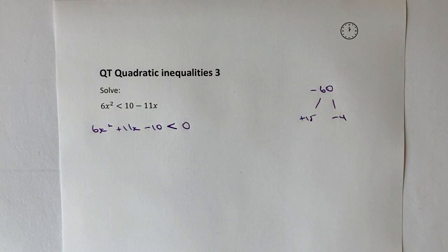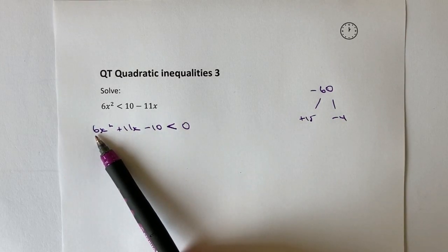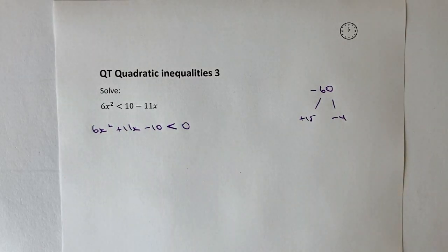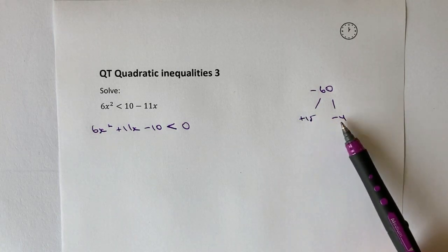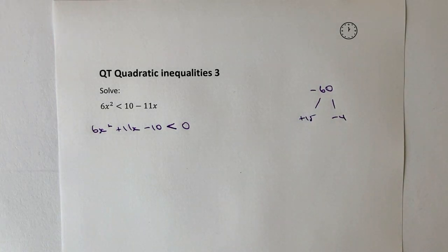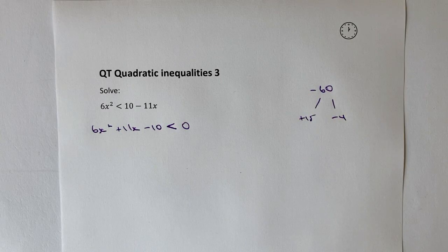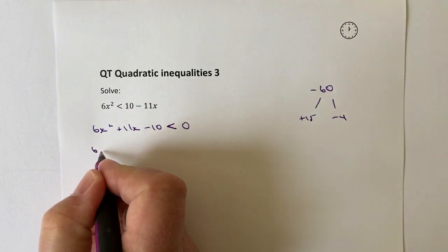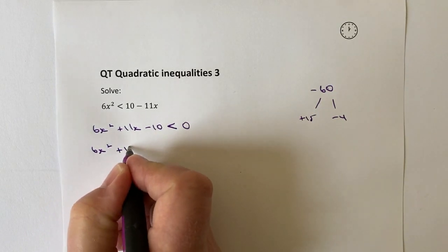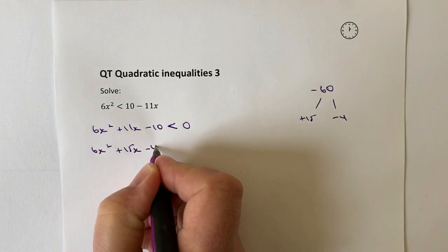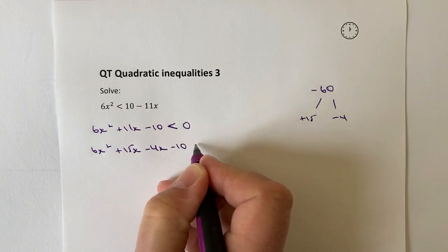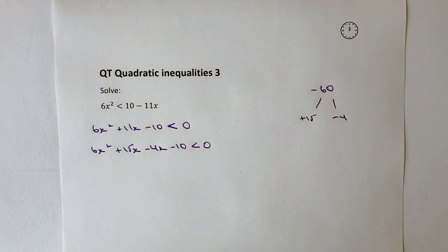Okay, now this particular technique I'm going to show you is one that I use when I factorise, particularly when we've got a coefficient of x squared. So the way I'm going to do that is I'm going to take these two factors and I'm going to use those in the middle of the equation and I'm going to rewrite it. So, what I'm going to say is rather than 11x, I've got 6x squared plus 15x minus 4x minus 10 is less than zero.